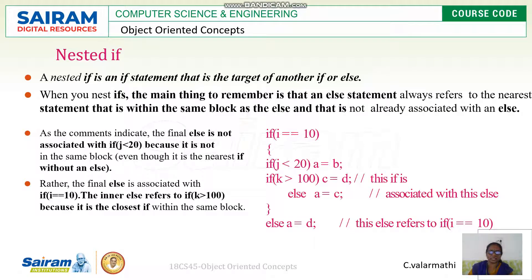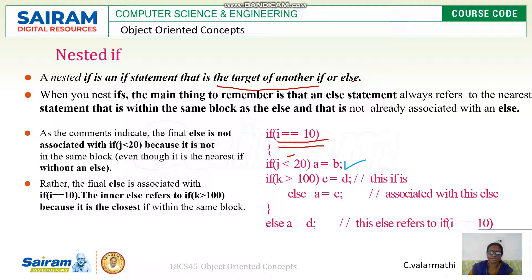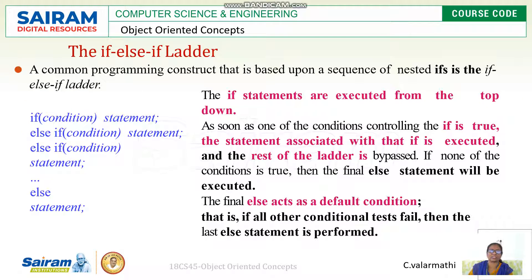Nested if: more than one if statement is allowed. If an if statement is written inside another if statement, it is called a nested if — it becomes the target of another if or else. For example, if i equals 10, it enters another if condition checking if j is less than 20, then further checks if k is greater than 100.